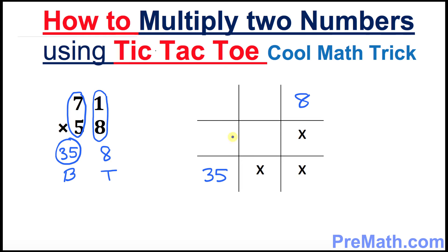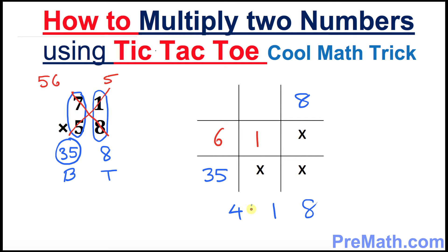Now put down the numbers in the middle by cross-multiplying: 7 times 8 is 56, and 1 times 5 is 5. 56 plus 5 is 61, so put 1 right here and 6 right up here. The final step is to vertically add them up: 8, then 1; 35 and 6 gives you 41. So your complete answer is 4118.